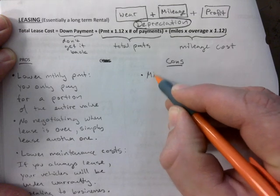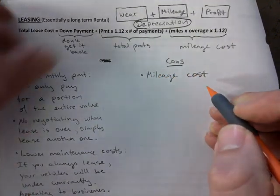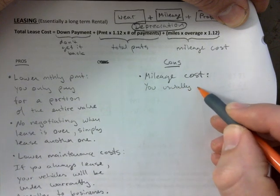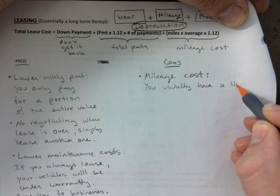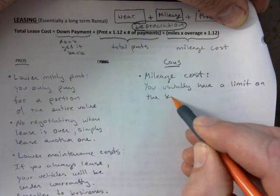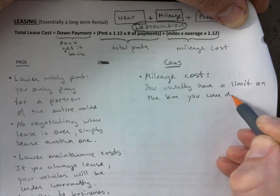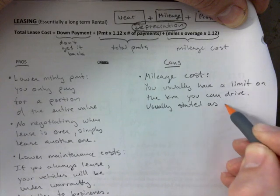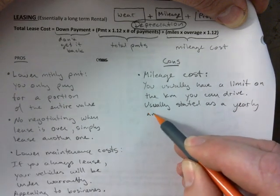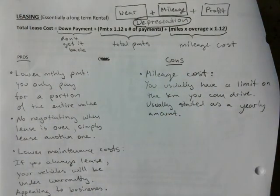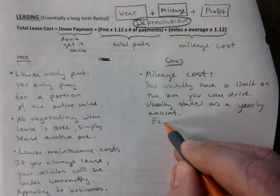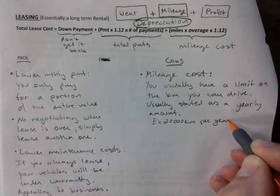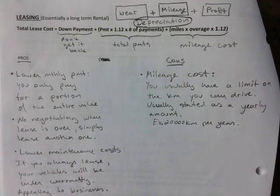So let's talk about some cons. You have mileage costs. Mileage cost is the big one. You usually have a limit on the kilometers you can drive. Usually stated as a yearly amount. For example, it could say 20,000 kilometers per year. So that means if it's a two-year lease, you're allowed 40,000. If it's a three-year lease, you're allowed 60,000, and so forth.